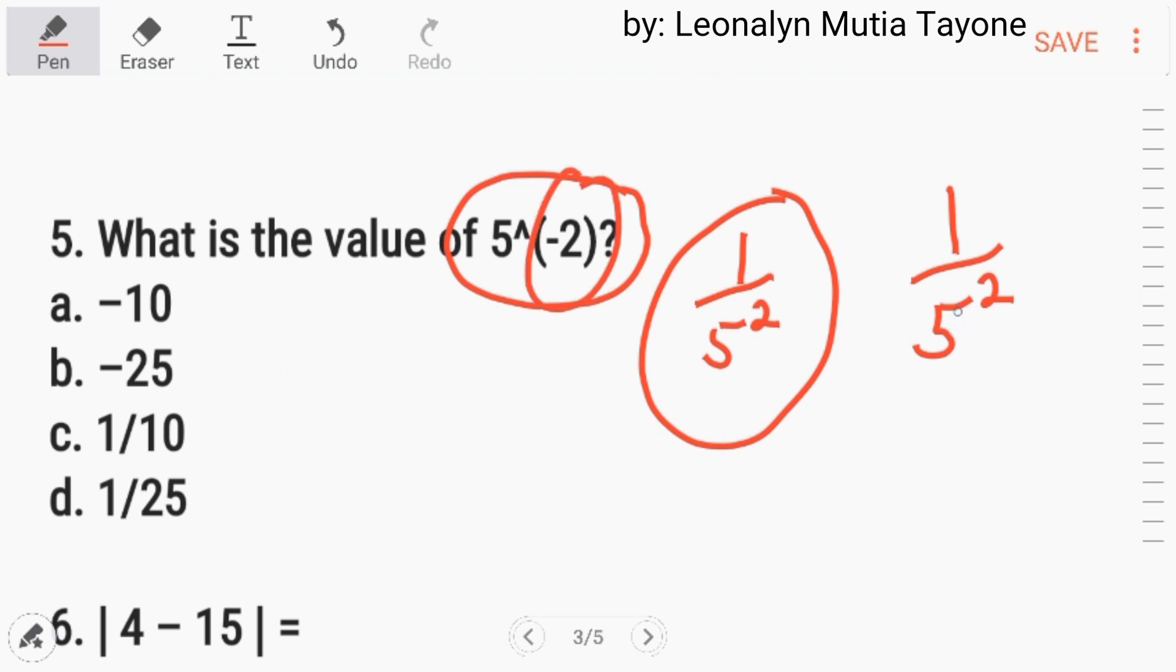Gawin mo siyang denominator para maging positive yung exponent mo. So, 1 over 5 raised to 2. 5 times 5, that is 25. So, 1 over 25. So, ang sagot dito ay letter D.